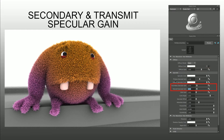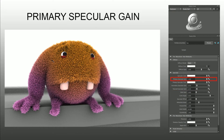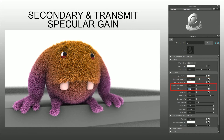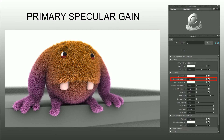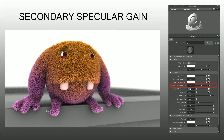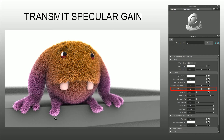Next is the secondary and transmit specular gain. I've set these down to 0.07 — not completely off, just to show you the difference. At those settings you can see it removes a lot of the translucency around the edge, giving a flatter shader overall. Boosting the primary specular gain to 1.0 gets a little bit more light on those surface furs. Moving down and increasing the secondary specular gain to 0.5 brings that rim light back again. Turning the transmit specular gain up gets a lot of that white coming through the edges.